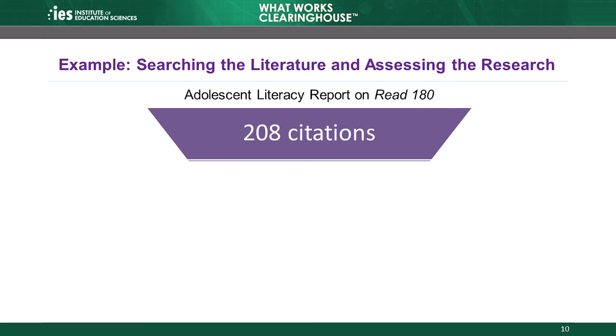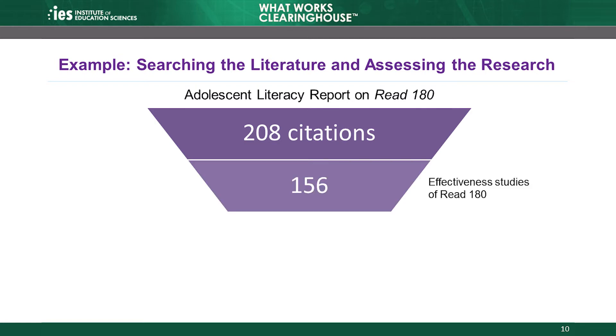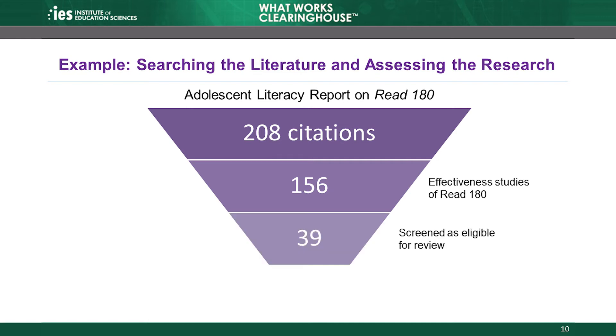The screener also determines which of the remaining effectiveness studies are relevant to the systematic review, meaning that the studies meet the criteria outlined in the protocol related to outcomes and study sample characteristics. If the screener deems the study a relevant effectiveness study, and therefore eligible, a certified WWC reviewer verifies the study's eligibility. For the Read 180 Intervention Report, the WWC determined that 156 of the 208 citations identified in the literature search were effectiveness studies. The rest of the citations represented a range of publications—news articles, advertisements, trainings, and so on. Only 39 of those 156 studies used an eligible design and met the adolescent literacy protocol criteria, making them eligible for review.